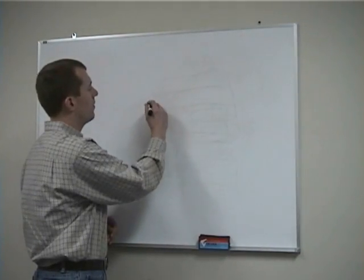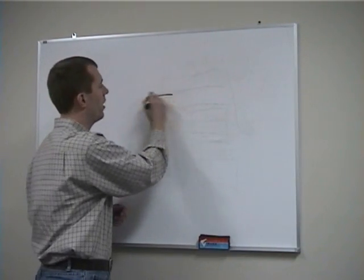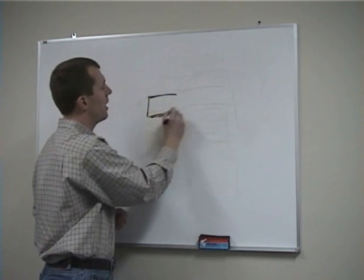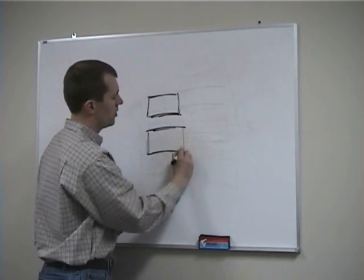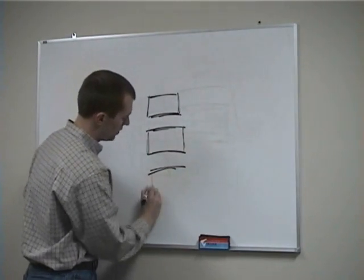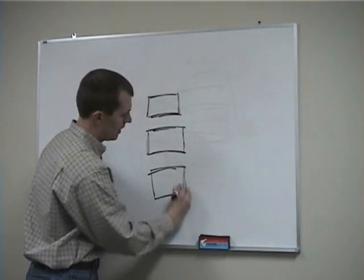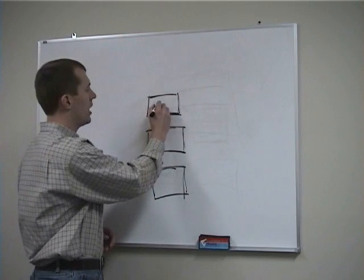Traditionally, if someone has more than one server, they'll have multiple physical boxes in their environment. So each of these boxes here represent a physical server. And each of these servers is running an operating system.